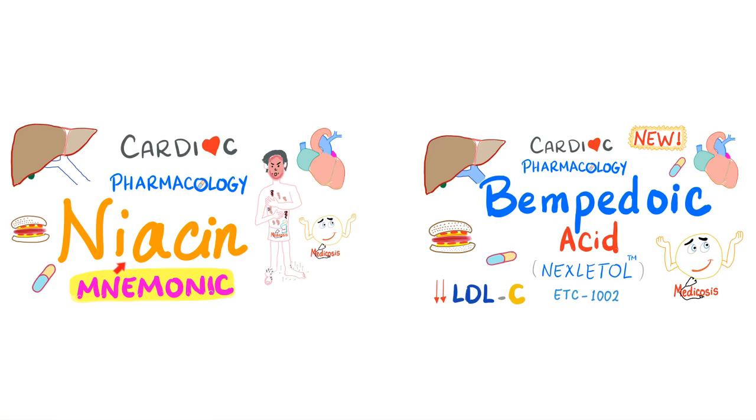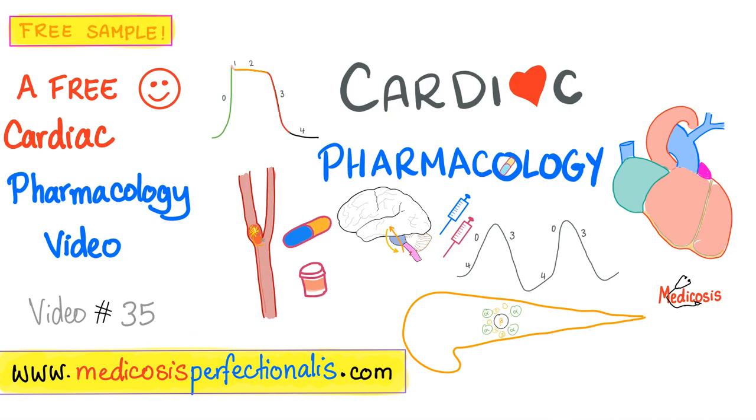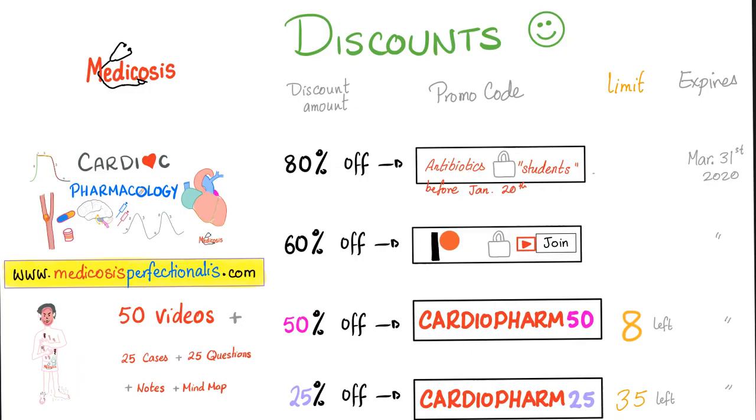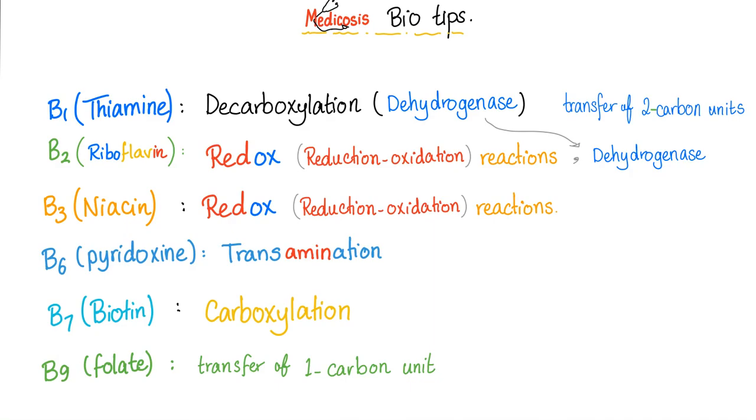To know more about niacin, the lipid-lowering agent, check out my video called Niacin Mnemonic. To learn about all the anti-hyperlipidemics, anti-hypertensives, anti-arrhythmics, anti-CHF, go to medicosisperfectionist.com and get my cardiac pharmacology course. Use the promo code CARDIOFARM50 to get a 50% discount, available for eight students only until the end of the month.